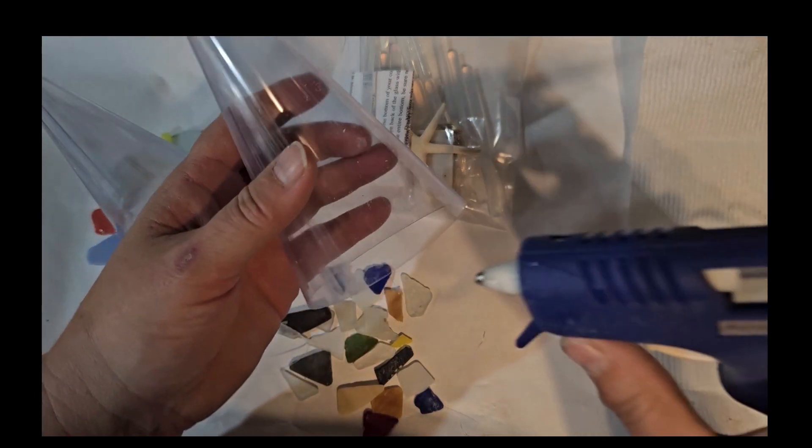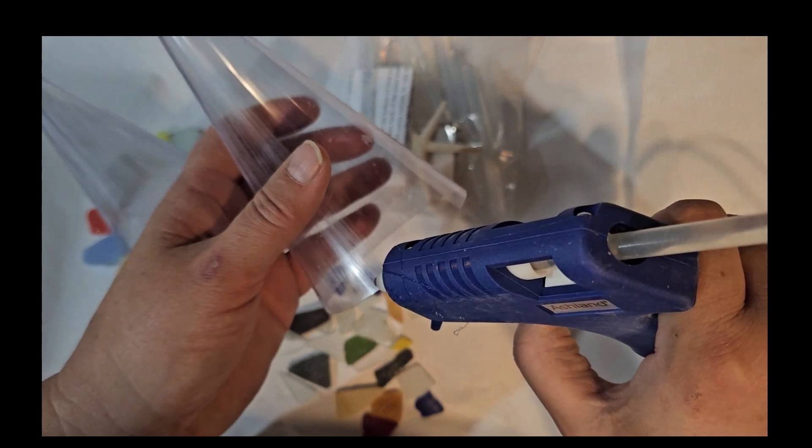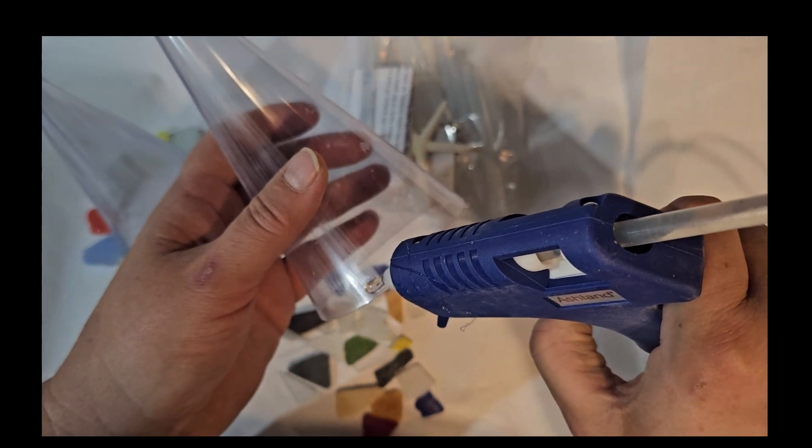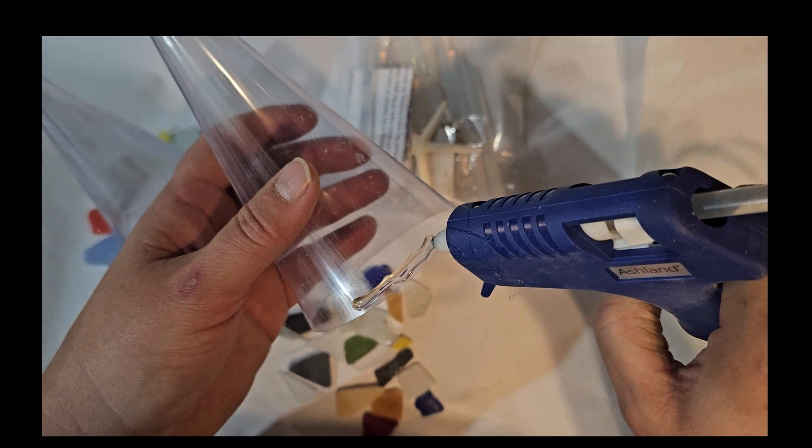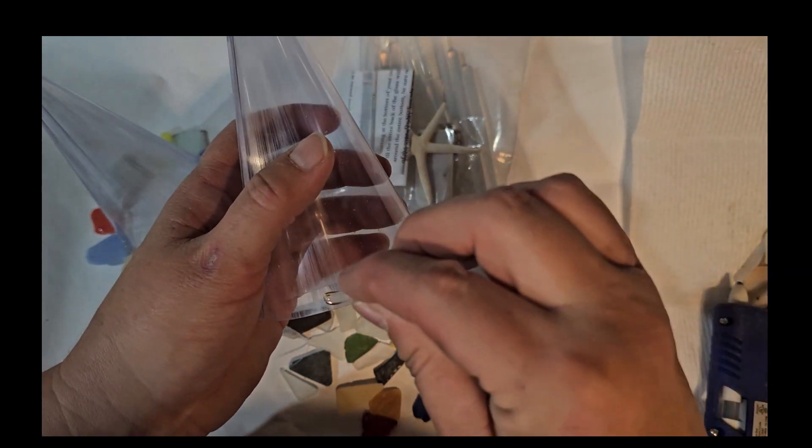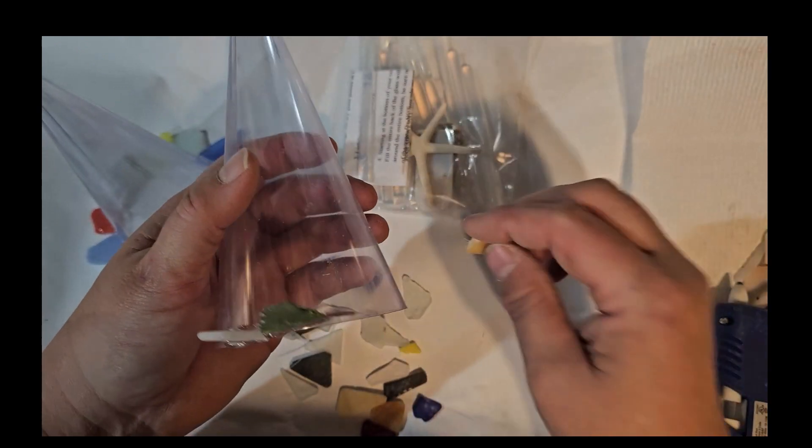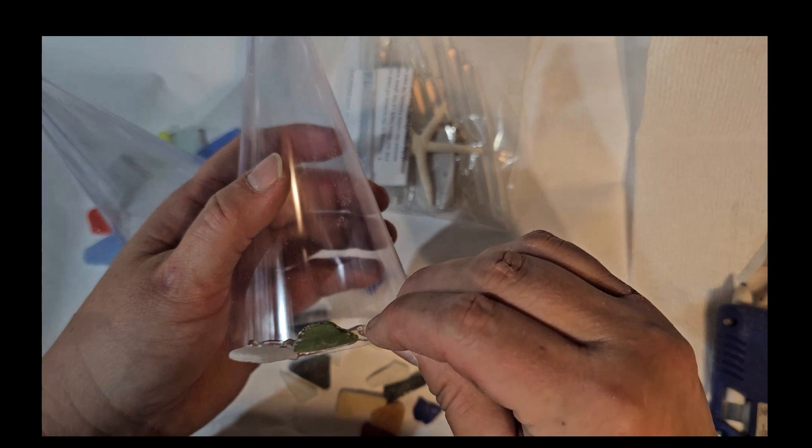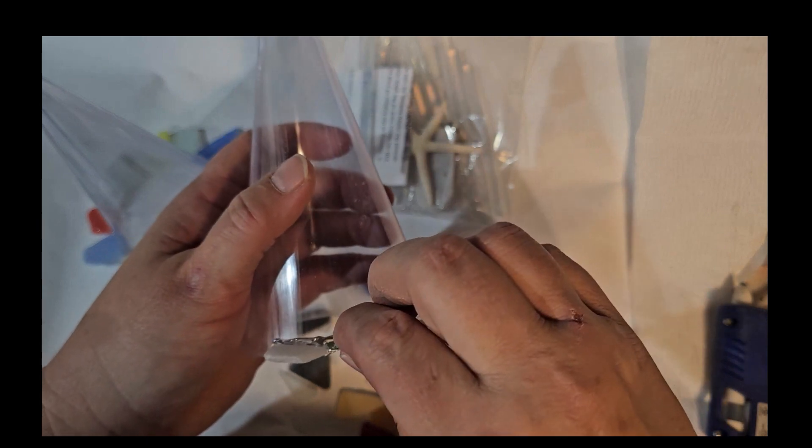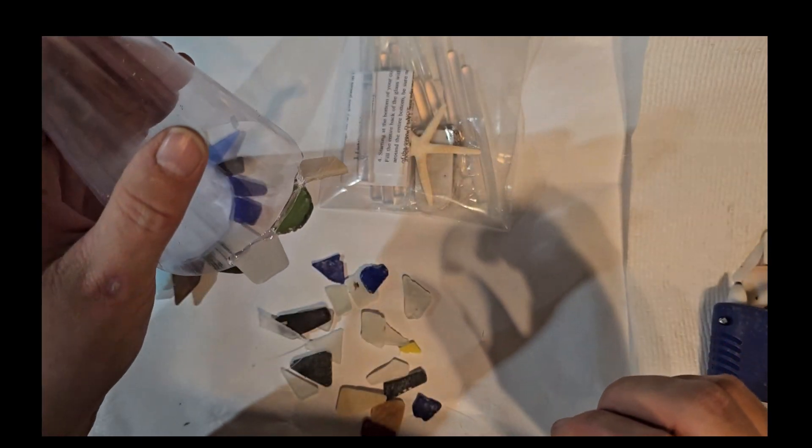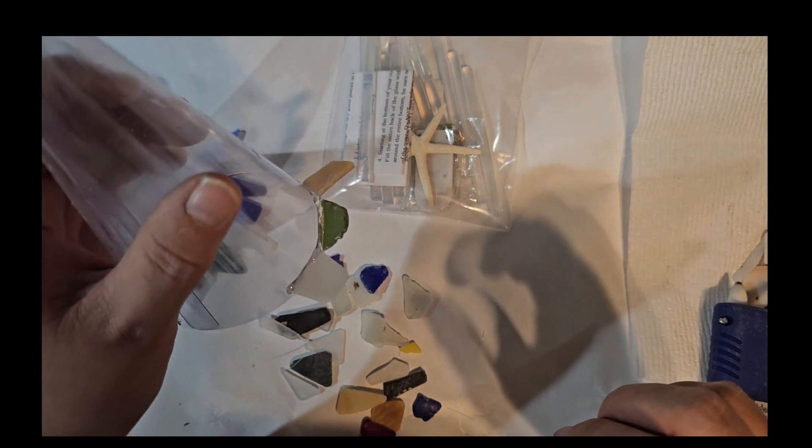What you are going to do is take your glue gun that is not included in the kit, you'll have to use your own glue gun. Put just a little bit of glue on the bottom of the cone and start to assemble the bottom layer of your sea glass tree sticking out just like this. See how they are sticking out?